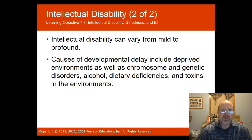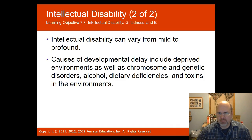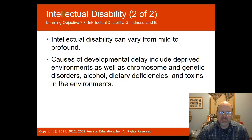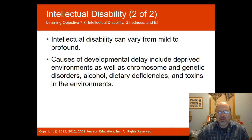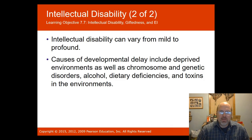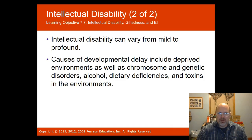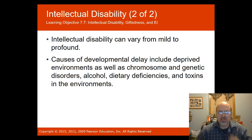Intellectual disability can vary from mild to profound. The causes of developmental delay include deprived environments, chromosome and genetic disorders, fetal alcohol syndrome (where the developing embryo is exposed to alcohol), Fragile X syndrome (a gene passed to a child that can lead to intellectual disabilities), dietary deficiencies, toxins in the environment like lead exposure, and childhood trauma.